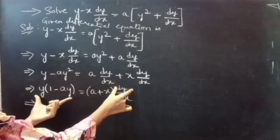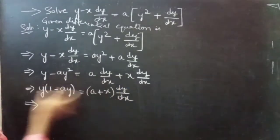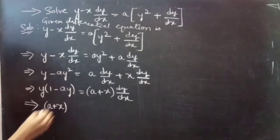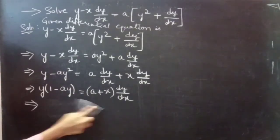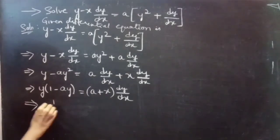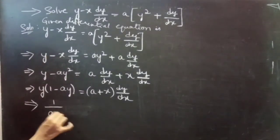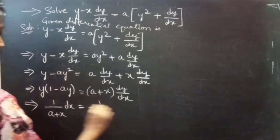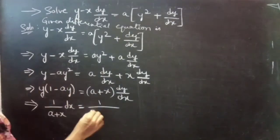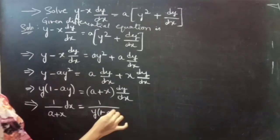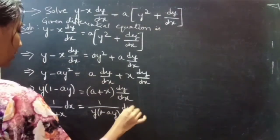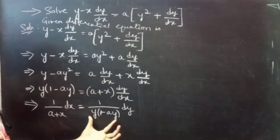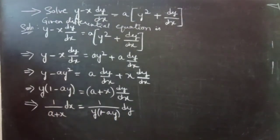Now we separate the variables. Taking the (a plus x) term to the right-hand side and the y(1 minus ay) term to the left-hand side, we get 1/(a plus x) dx equals 1/(y into (1 minus ay)) dy. This is of the form f(x) dx equals f(y) dy, so the variables are separable.